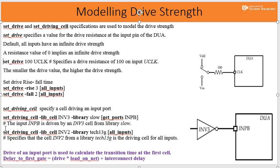As a second example: set_driving_cell -lib_cell inverter2 -library tech13g, meaning inverter2 is mapped from the library tech13g for all specified inputs. In conclusion: set_drive focuses on modeling driving strength using a resistance value; set_drive_rise and set_drive_fall model rising and falling delay. The total timing delay at the input equals drive strength multiplied by the load on the net plus interconnect delay.